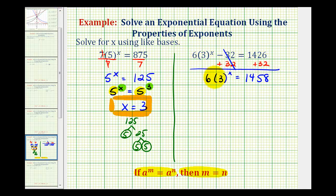Now we'll divide both sides by six. This simplifies to one, so we have 3^x = 1458 ÷ 6 = 243. Now we want to see if we can write 243 with a base of three.